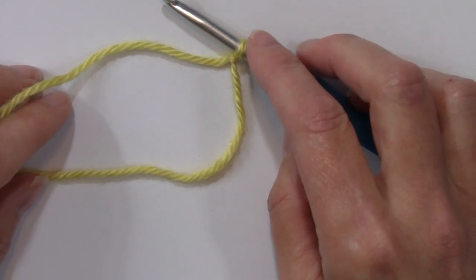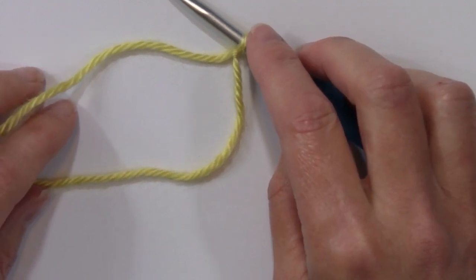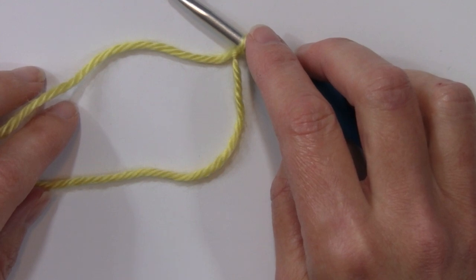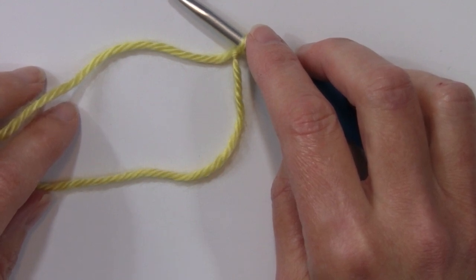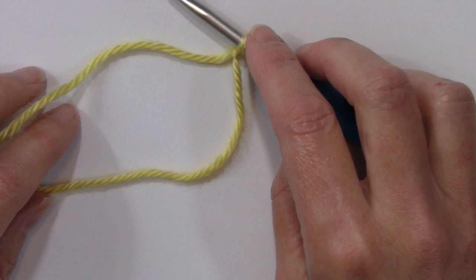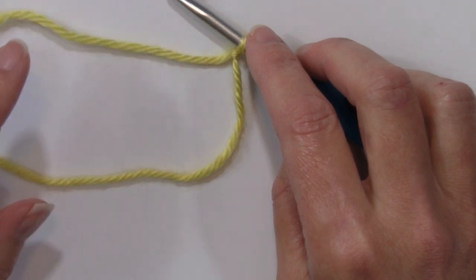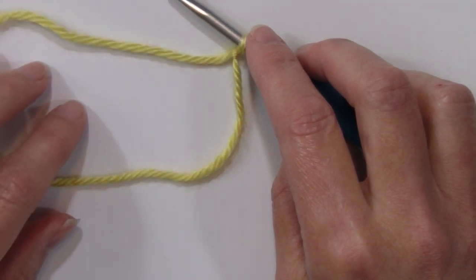Today's tutorial is going to show you how to make the lemon peel crochet stitch. This stitch is gently textured. It actually has the appearance of a lemon rind, hence the name of the stitch.